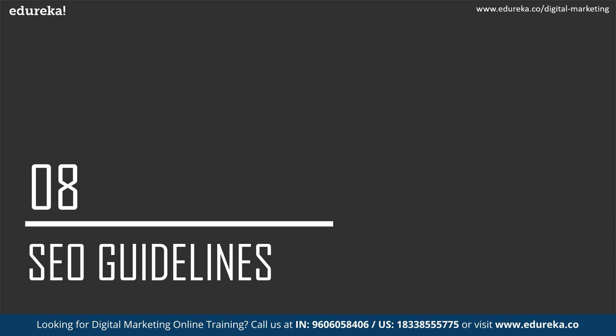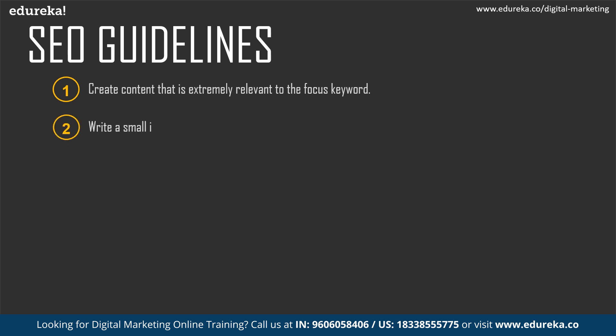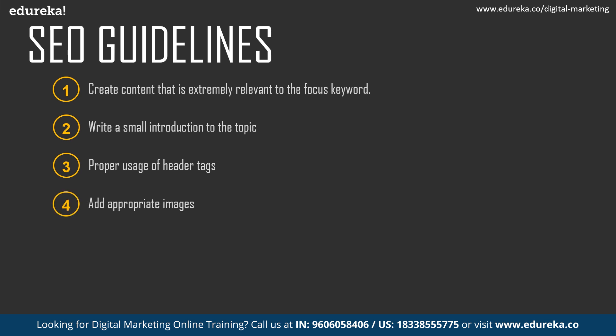Next, let's look at a few SEO guidelines for beginners. There are many things to focus on when it comes to search engine optimization, but these six points are really a rule of thumb for people just starting out with SEO. First, create content that is extremely relevant to your focus query or keyword. Write a small introduction to the topic, also known as meta description — do not miss out on this and remember to add your keyword to it. Next is the proper usage of header tags: H1, H2, H3, H4, H5 tags. For different topics use a different header, and for subtopics use a different header — this helps with the readability of your text and also helps the search engine crawler understand the hierarchy of your content.